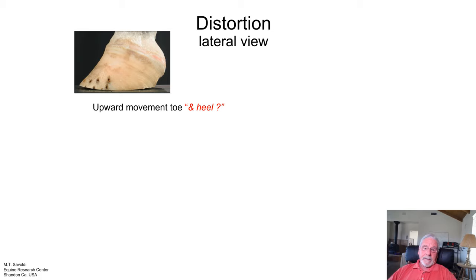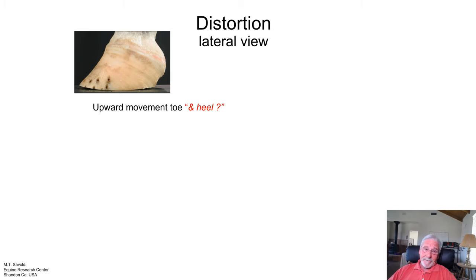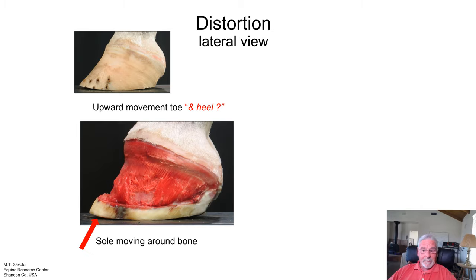Let's look again at the upward movement in the toe and heel area. Right now, the way the foot is placed on the platform, it looks like we have a bend in both the toe and the heel. But that has to do with stance — if this horse was standing a little bit forward, it would show the bend all in the toe area, and if standing back, the bend would show in the heel area.